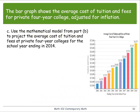The last part: use the mathematical model from Part B to project the average cost of tuition and fees at private four-year colleges for the school year ending in 2014. Since X is the number of years after 2000, X for Part C is 2014 minus 2000, or 14 years after the year 2000.